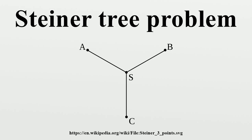These new vertices introduced to decrease the total length of connection are known as Steiner points or Steiner vertices. It has been proved that the resulting connection is a tree, known as the Steiner tree. There may be several Steiner trees for a given set of initial vertices.